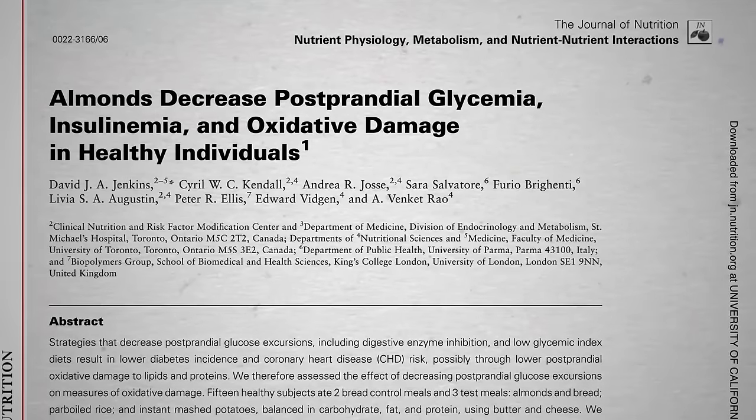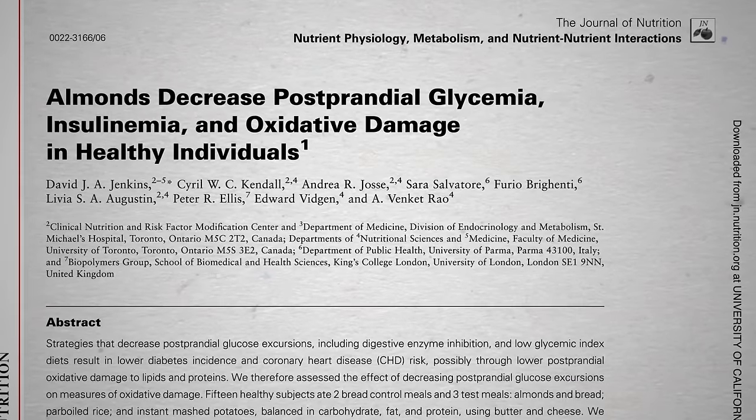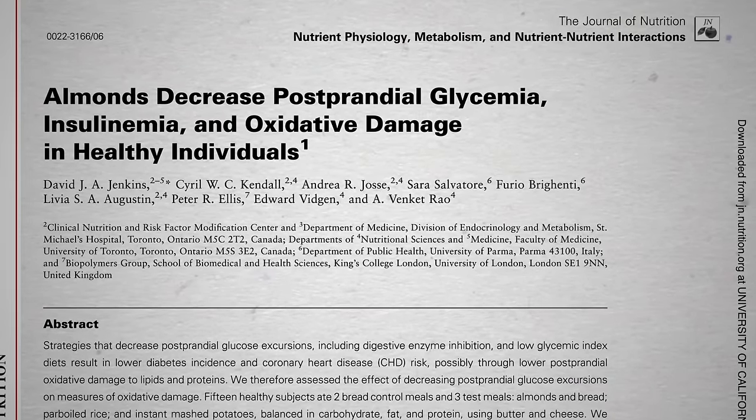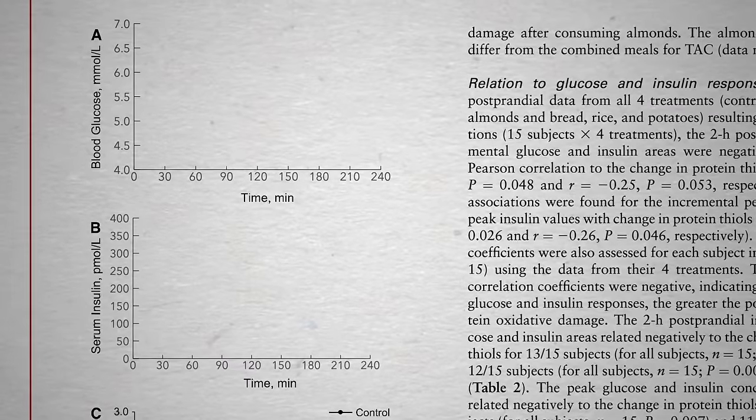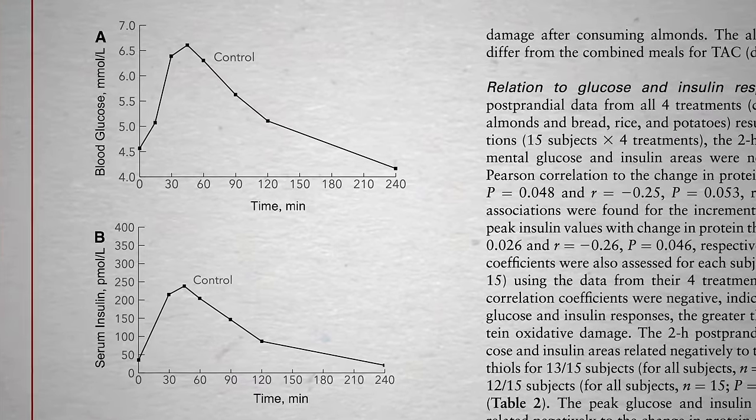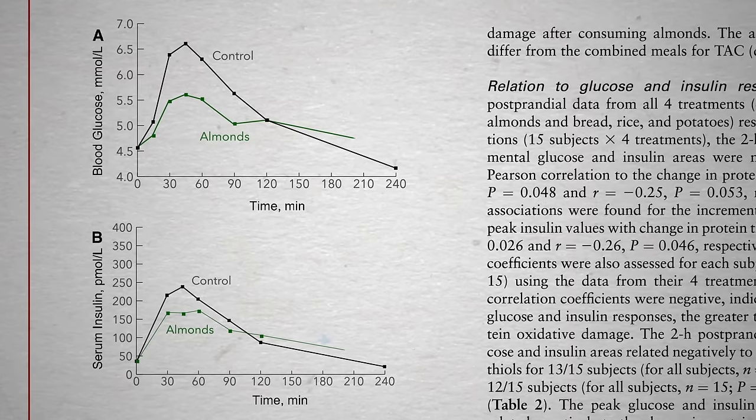So a chicken sandwich may aggravate the metabolic harm of the refined-carb white bread it's on, but what about a PB&J? We saw that adding nuts to Wonder Bread actually calms the insulin and blood sugar response.